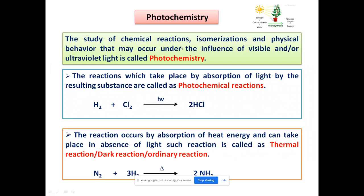What is photochemistry? 'Photo' means light. Photochemistry is the branch of chemistry which deals with the absorption of light by matter — solid, liquid, or gas — and the study of chemical reactions, isomerism, and physical behavior that occur under the influence of visible or ultraviolet (UV) light. It deals with the interaction of electromagnetic radiation from the UV-visible region with substances.